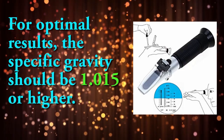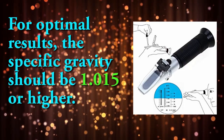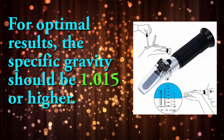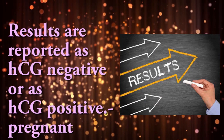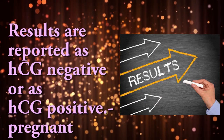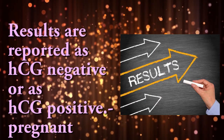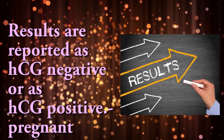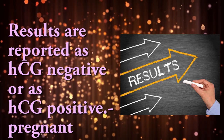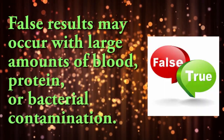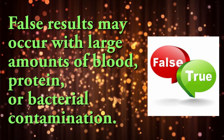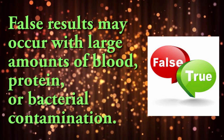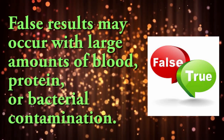The specific gravity should be 1.015 or higher. Results are reported as hCG negative or hCG positive. False results may occur with large amounts of blood, protein, or bacterial contamination.